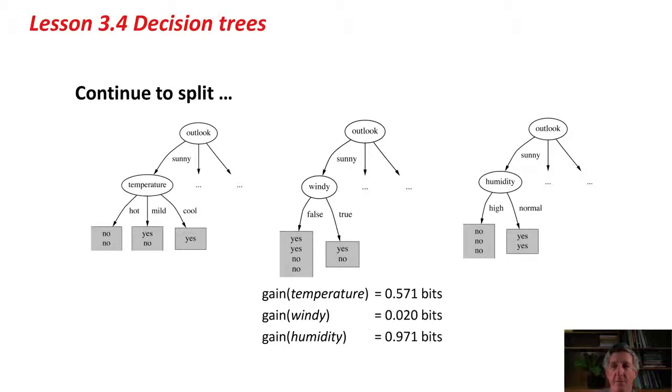In this case, it's humidity with a gain of 0.971 bits, because you can see that if we branch on humidity around here, then we get pure noes, three noes in one and two yeses in another. When we get that, we don't need to split any more. We're, again, on a quest for purity. That's how it works. It just carries on until it reaches the end, until it has pure nodes.